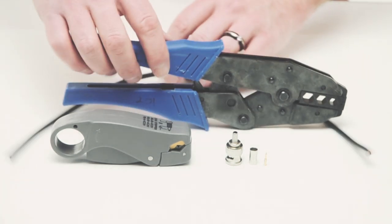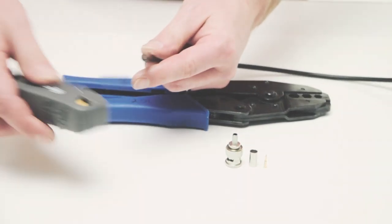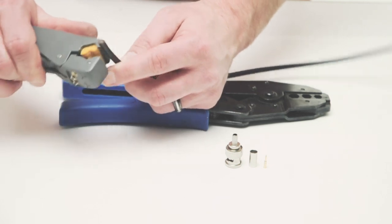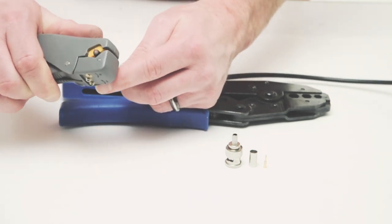To begin, take your coax strip tool and remove the jacket and dielectric. Rotate the stripper around the outside of the jacket a few times and pull off the jacket.